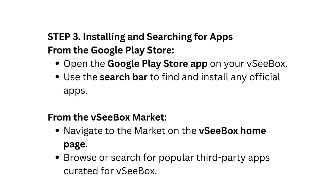Step 3: Installing and Searching for Apps. From the Google Play Store, open the Google Play Store app on your VC Box and use the search bar to find and install any official apps. From the VC Box Market, navigate to the market on the VC Box homepage to browse or search for popular third-party apps curated for VC Box.